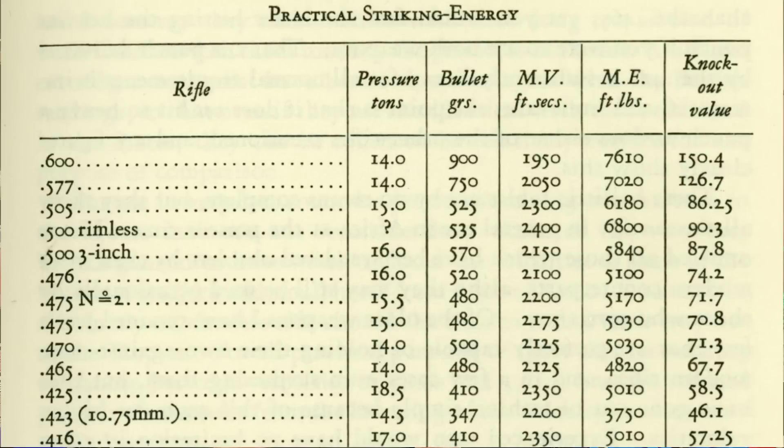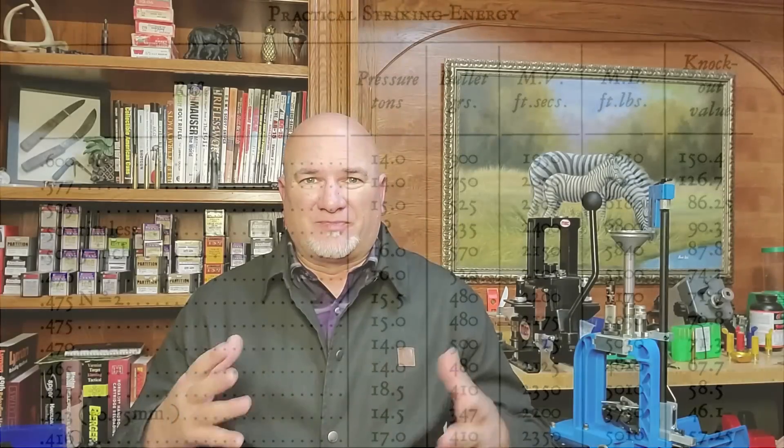Today, Taylor's formula is widely considered debunked or invalid because it makes obviously less powerful cartridges seem more lethal based on weight and diameter alone. Taylor eventually admitted to some inconsistencies with his formula. The big problem is that it makes bullet diameter equal to velocity, which makes his values seem a little funky at times.